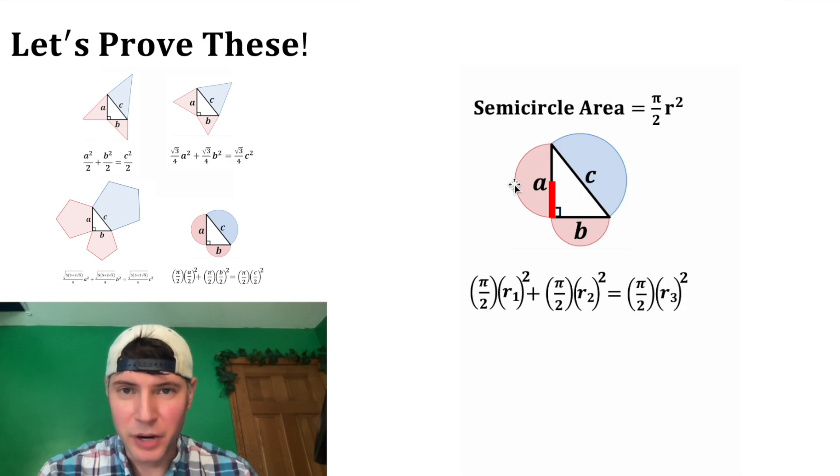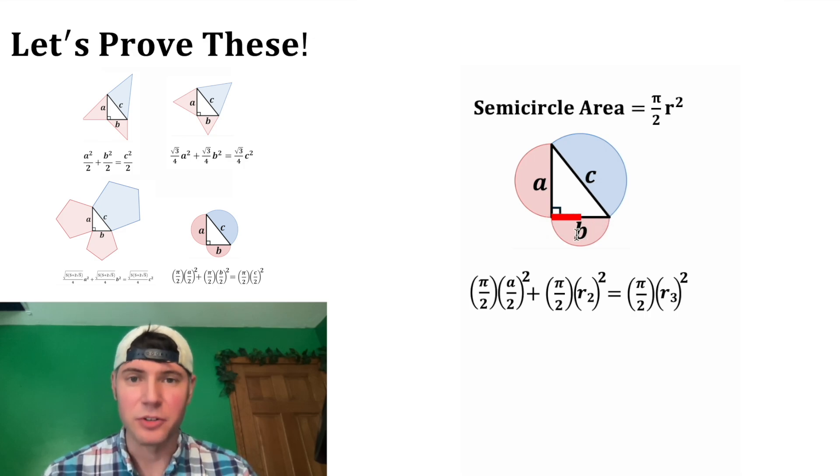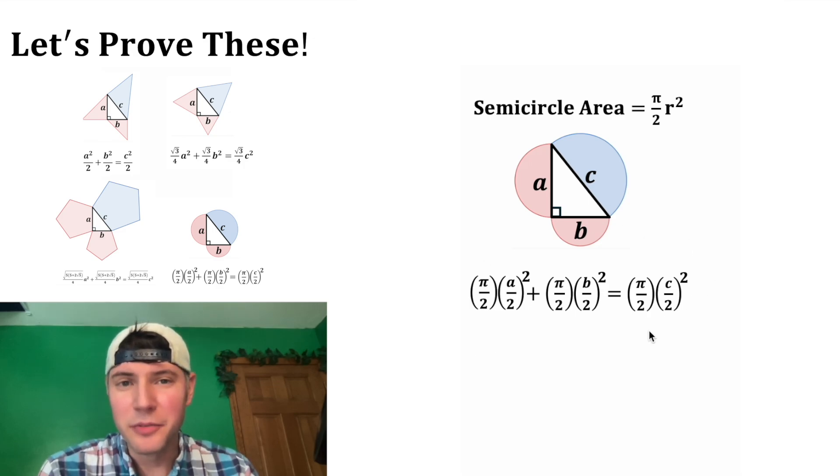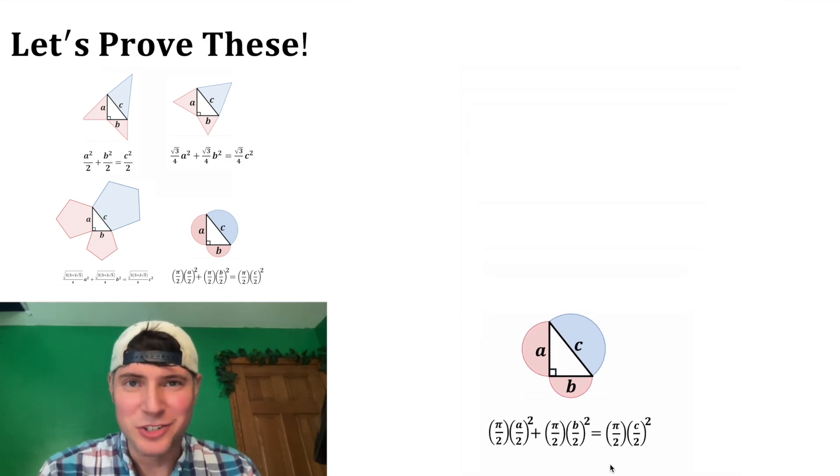So r sub 1 is the radius of this one. That's going to be half of the distance a, so we can change this to a over 2. And then r sub 2 would be the radius of this semicircle, so that's going to be half of b, so this will be b over 2. And then the radius of this one is going to be half of this side length c, so we'll change that to c over 2. So this is the formula for semicircles, and we can prove that this is true.